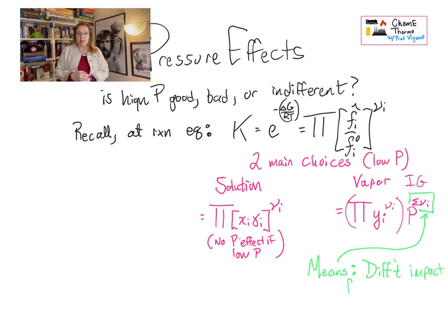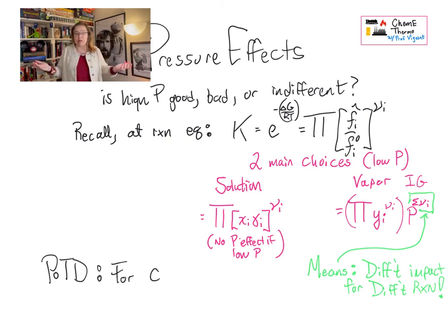And this is the crux of the matter saying every reaction could be different, because it really depends on what the stoichiometric coefficients add up to. If the stoichiometric coefficients are a positive number, then pressure has a big influence and possibly growing influence. If you have the stoichiometric coefficients as a sum of them as a negative number, it has a completely different influence.